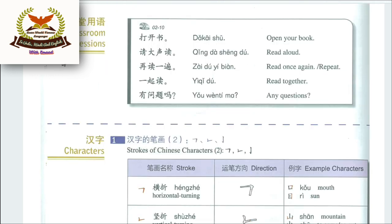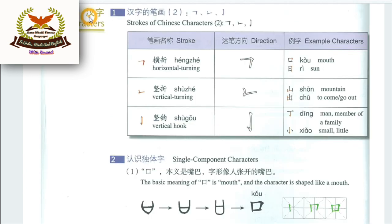Classroom expressions: Kāi shū — open the book; Dú — read aloud; Zài dú — read once again / repeat; Qǐ lái dú — read together; Any questions? These are common classroom instructions used during the lesson.